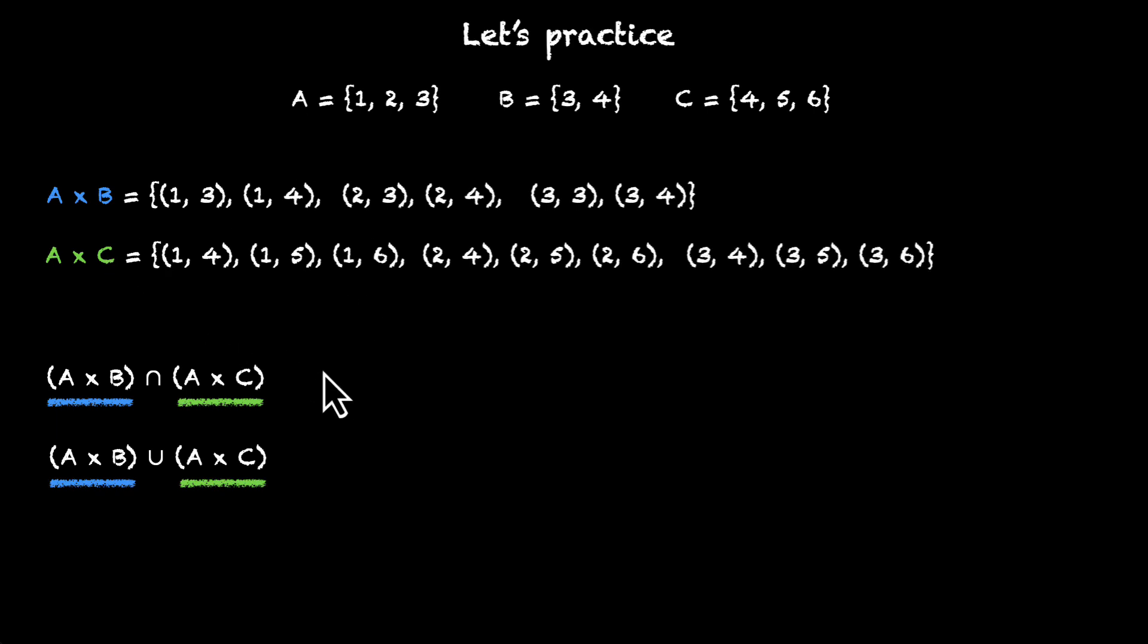Now as the final step, let's find the intersection and union of these two sets. What are the things that are common between these two? Let's do the intersection first. 1,3 is not there. 1,4 is here, so we have (1,4). 2,3 is not there but 2,4 is there. 3,4 is also here. So the intersection is (1,4), (2,4), and (3,4).